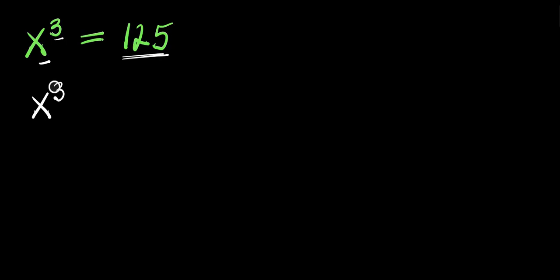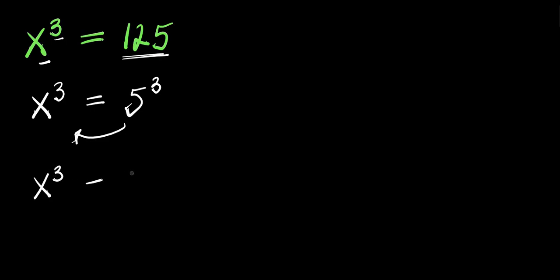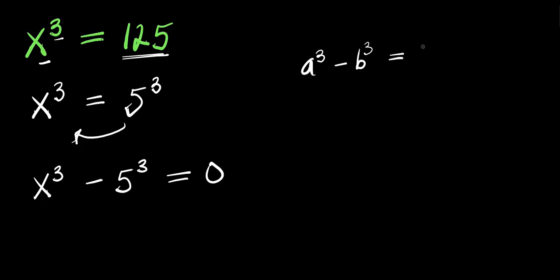We have x to the power three equals five to the power three. From here we move this over, giving x cubed minus five cubed equals zero. Now, if you have a cubed minus b cubed, this equals a minus b times a squared plus ab plus b squared.